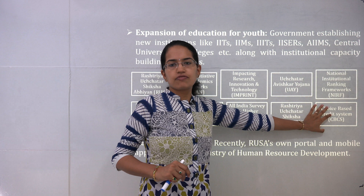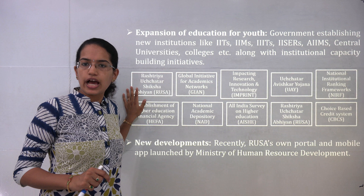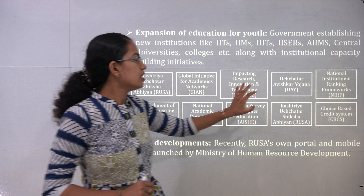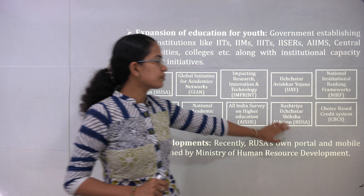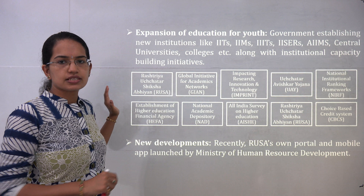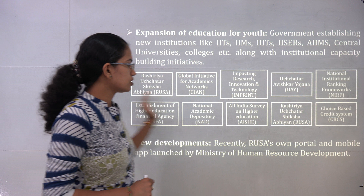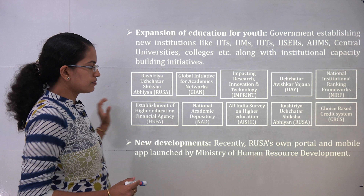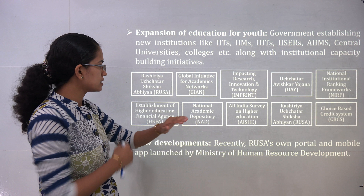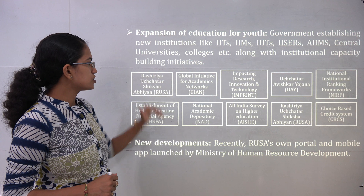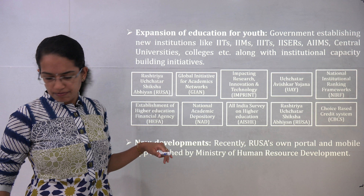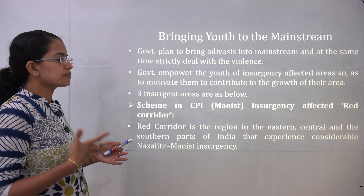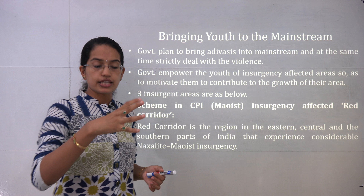Expansion of education for youth involves programs like the Rashtriya Uchatar Shiksha Abhiyan, global initiatives, the Imprint scheme, the Uchatar Upakar scheme, and the ranking scheme — all discussed in the class on higher education. New portals established under Rashtriya Uchatar Shiksha Abhiyan include a mobile app released by the MHRD, with the idea of bringing youth to the mainstream from regions with less exposure.